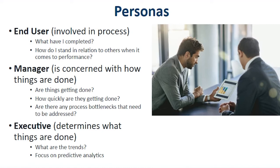Managers are mainly interested in operational reports that share how the process performs as a whole in their particular department and may ask: Is my team getting things done? How quickly are they completing their tasks? Who has the heaviest workload? Where are we at in a specific instance of that process? Executives are more concerned with trends, long-term strategy, and where they're at in hitting their objectives. Executives are forward-thinking, so they're interested in reports that help predict future trends.